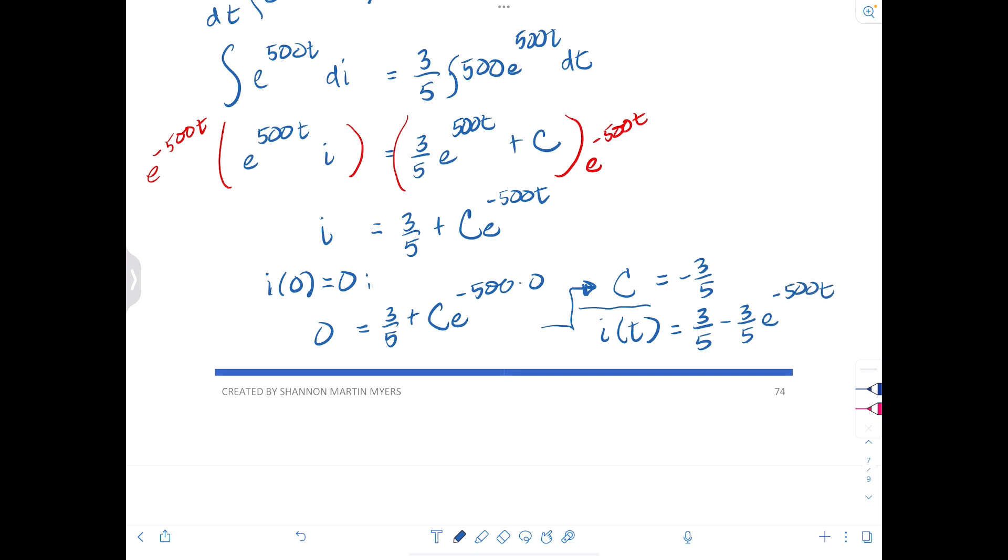So in general, I(t) will equal to 3/5 minus 3/5 e to the negative 500t. And we're good to go. I hope you have a wonderful morning, afternoon, or evening whenever you're watching this. And if you like what I'm doing, hey, hit like and subscribe. Bye.